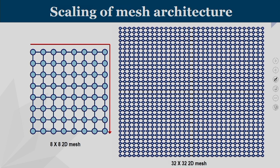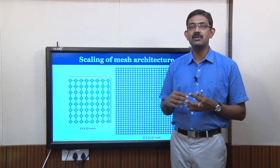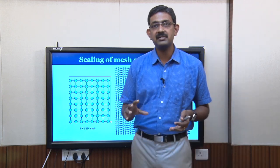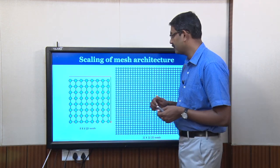A 32×32 mesh gives us 1024 cores — it is really huge. Our future systems are going to be of this order, with 1024 cores on a single chip. With such a magnitude, we have to find out whether our traditional routing algorithms and mesh structure will still support it.